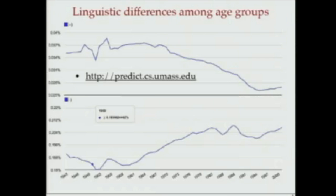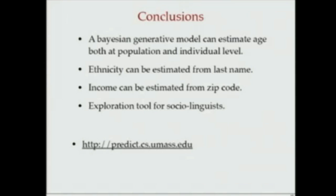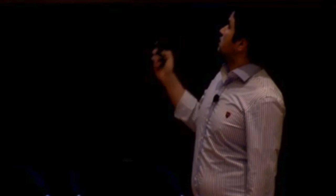To wrap up, I showed you a generative model for predicting age density estimation using Social Security baby name frequency data. A similar model can be used to predict ethnicity using last name, and another extension can predict income using zip code data. Using these demographic estimators combined with social media data, you can build exploration tools useful for marketers or social scientists. We have a prototype at predict.cs.umass.edu.